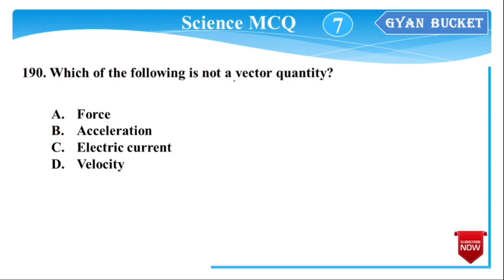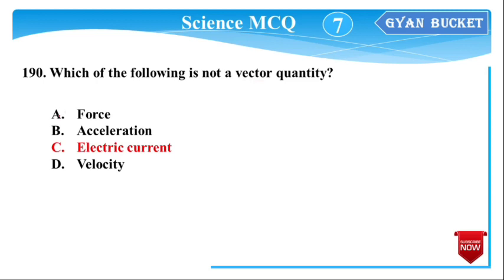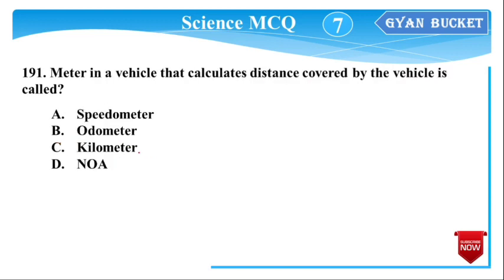Next question: Which of the following is not a vector quantity? Electric current is a scalar quantity, not a vector quantity. So the answer is electric current.